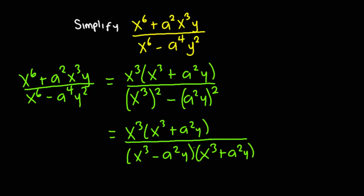you could realize that this x cubed plus a squared y cancels that. And finally, we'll be left with x cubed divided by x cubed minus a squared y.